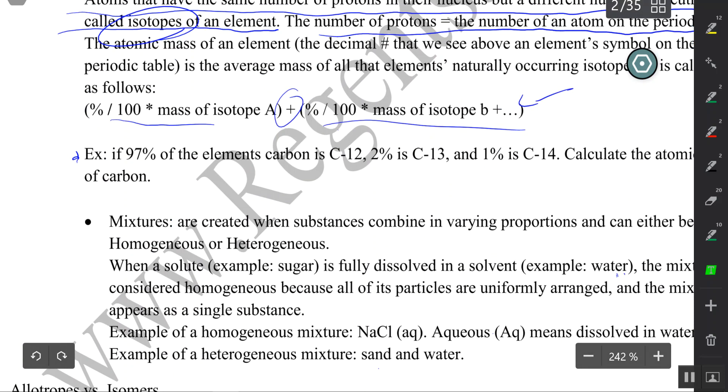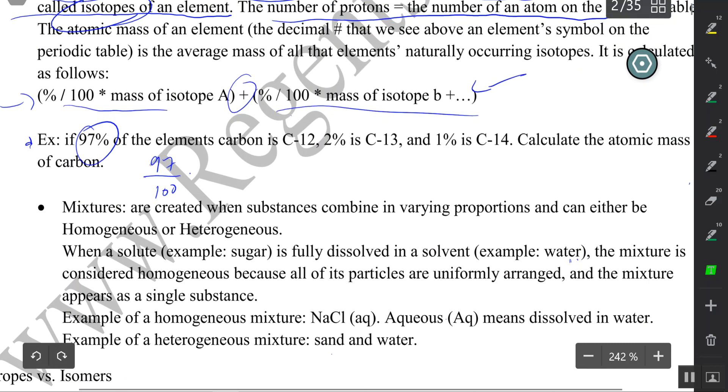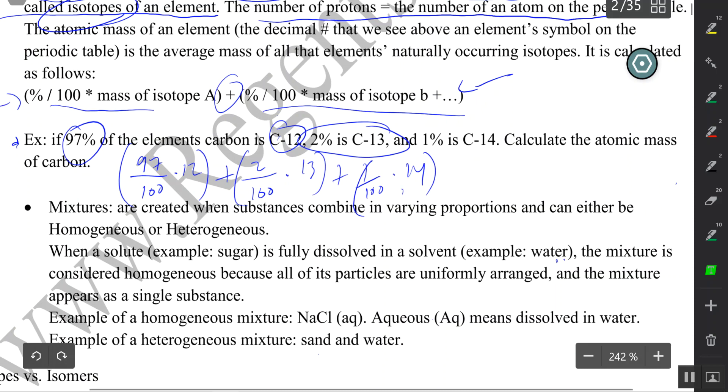We can calculate the atomic mass of carbon by following that same method. 97 over 100 is the percentage, percentage times mass (in this case 12), plus 2 percent over 100 times 13 the mass, plus 1 over 100 times the mass 14. Find your answer here, find your answer here, find your answer here, add them all together, and you'll get your atomic mass.